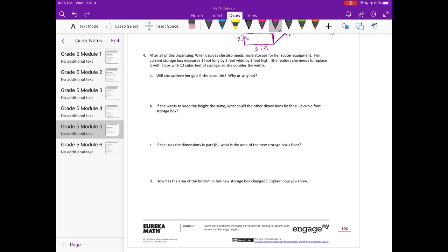Number 4: After all of this organizing, Wren decides she also needs more storage for her soccer equipment. Her current storage box measures 1 foot long by 2 feet wide by 2 feet high. She realizes she needs to replace it with a box with 12 cubic feet of storage. She doubles the width. Will this achieve her goal? It currently is 1 by 2 by 2, which is 4 cubic feet. If she doubles the width, it will be 1 times 4 times 2. That would only be 8 cubic feet. So no, it will only increase the cubic feet to 8.